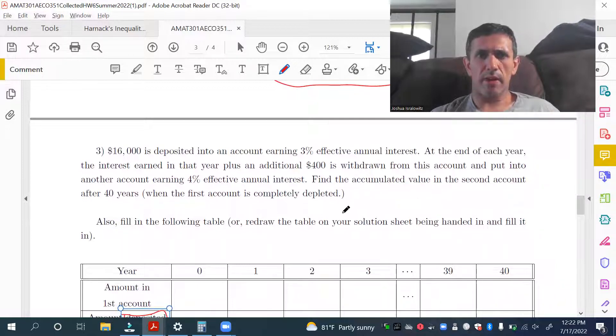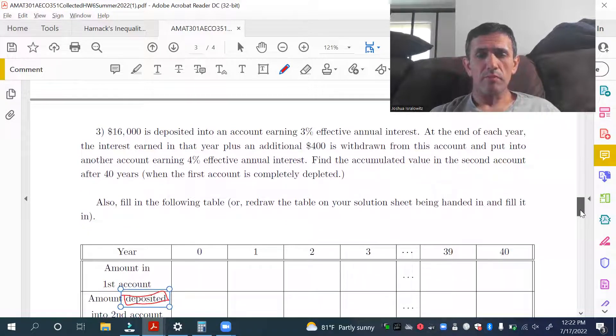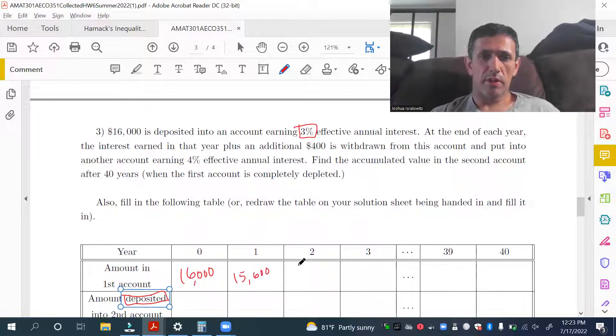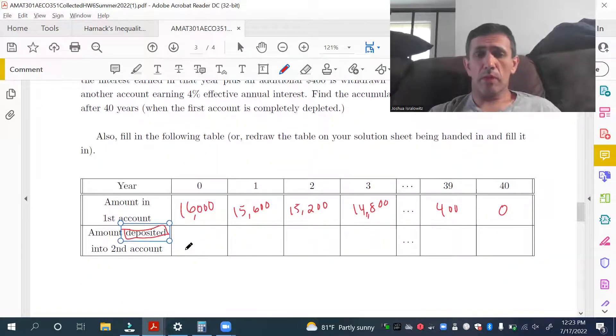So you deposit 16,000 into account at the end of each year interest plus this little 400 withdrawn and put into another account. The first account earns 3%. So, let's just take, let's just fill out the first row here. So, 16,000, then we subtract full interest. I don't care what that is right now. But then you subtract additional 400. So, it's 15,600, then it's 15,000, subtract interest and another 400. Et cetera, 14,800. Keep going, 400, and then finally zero. So, at the beginning of the first year, there's no interest earned.